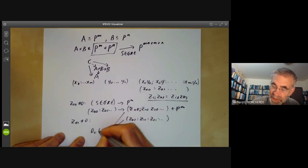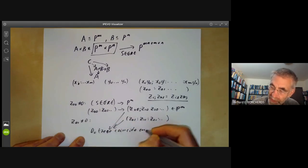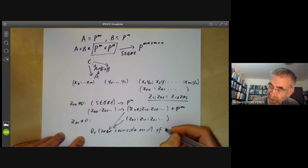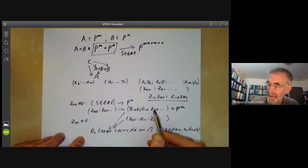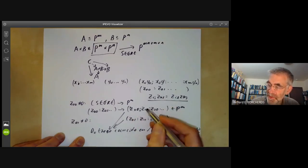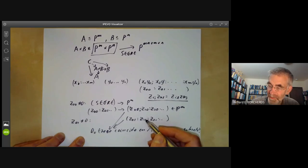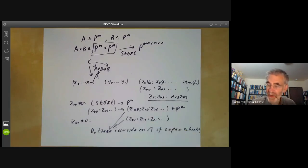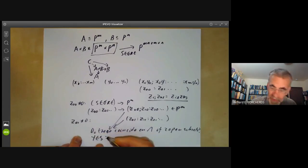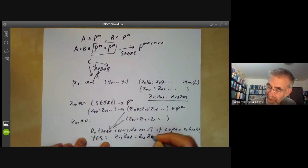And now the point is we need to check these two maps. So we say, do these coincide on the intersection of the two open subsets? So we want to know that these two points are actually the same.